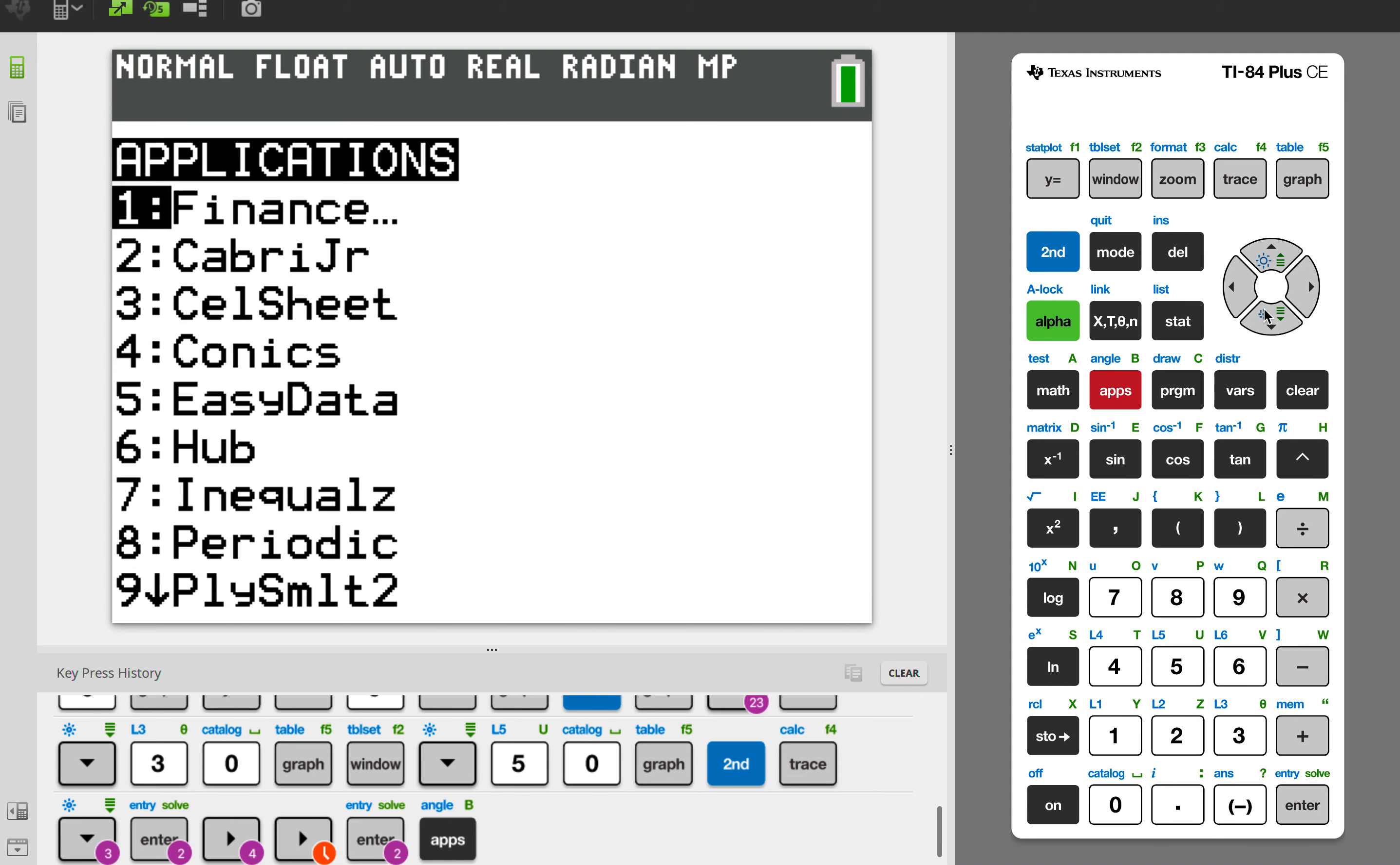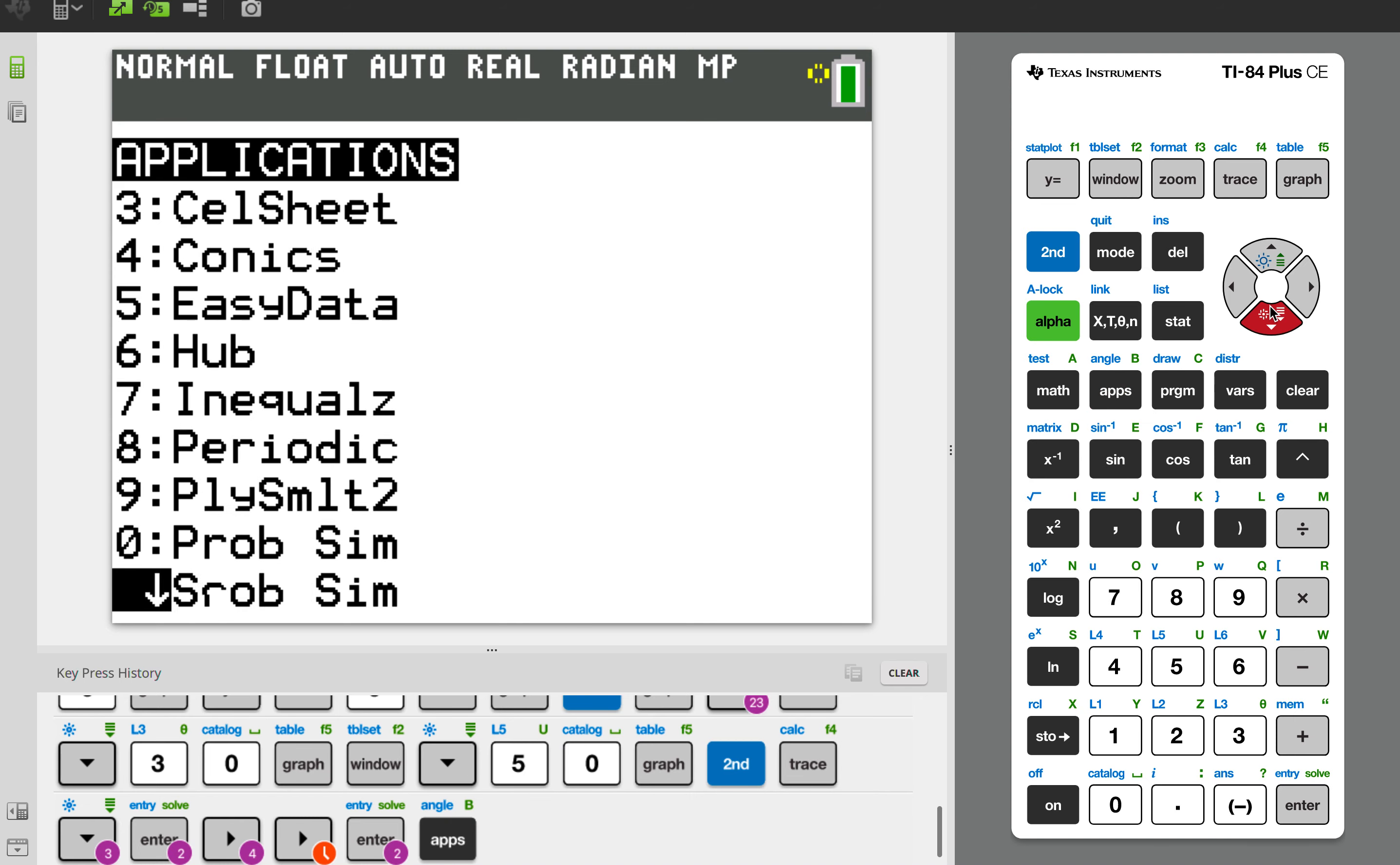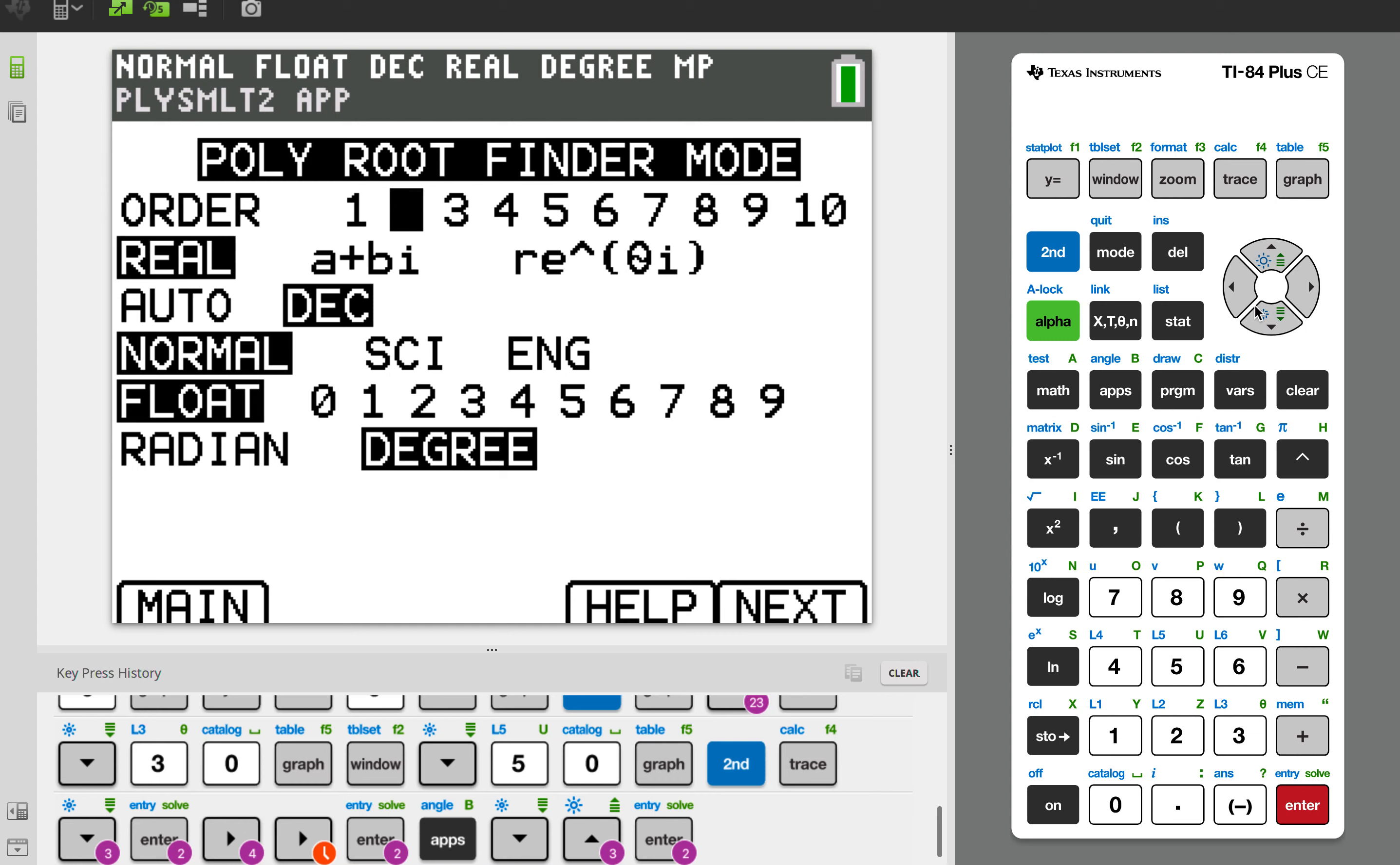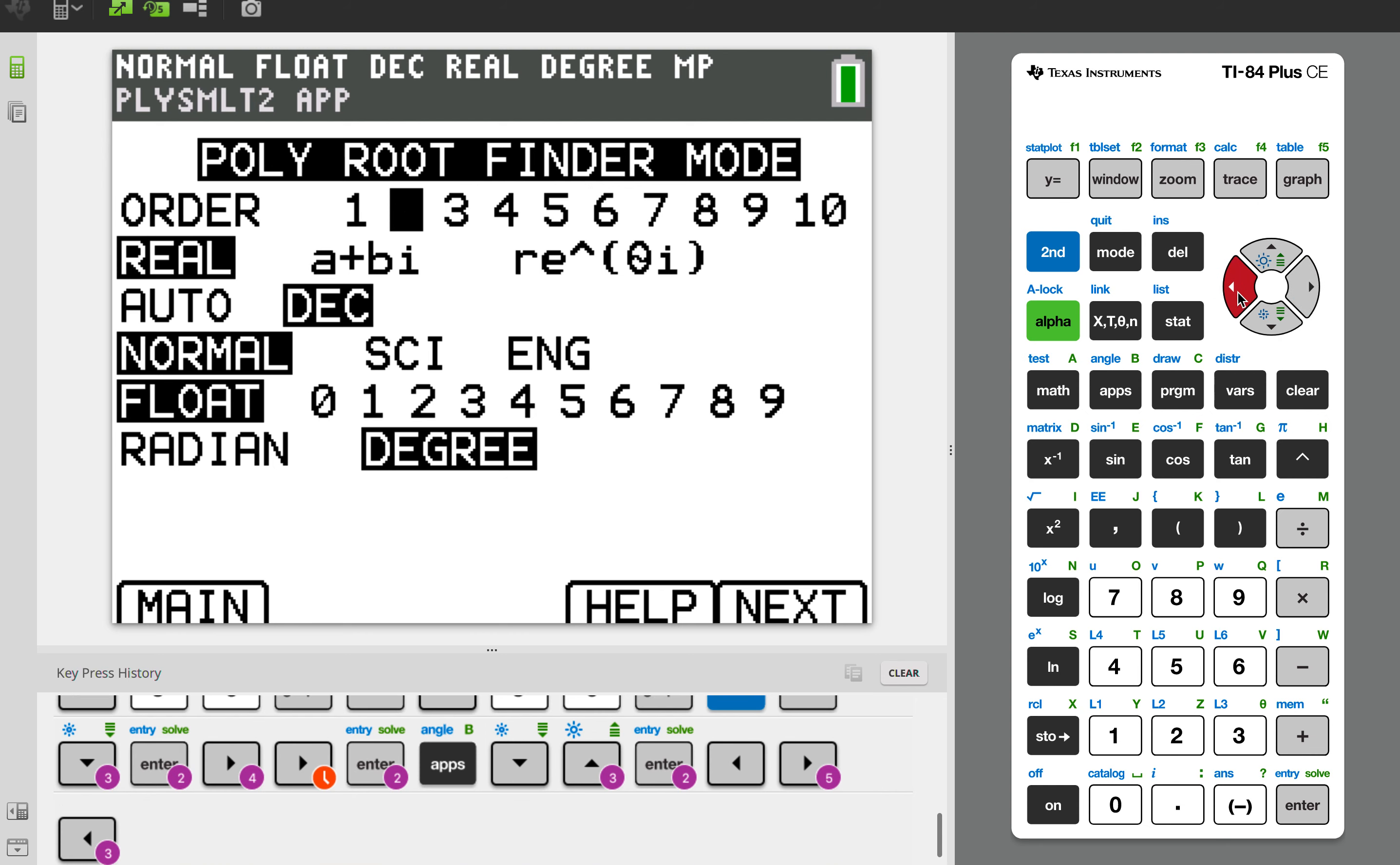I'm going to show you another method where you're going to go to apps and you're going to scroll all the way down until you get to poly simultaneous 2. You're going to click on that and select the first option which is polynomial root finder. Make sure that your order is set to 2 because we're dealing with quadratics. Make sure this is real, decimal, normal, float, and it's on radian. Now in order to press next, you have to press on the graph button.